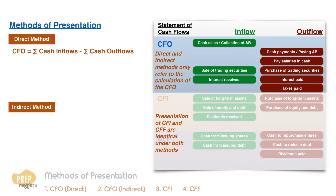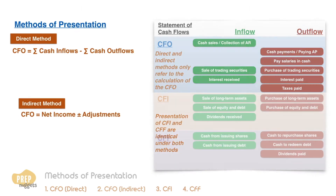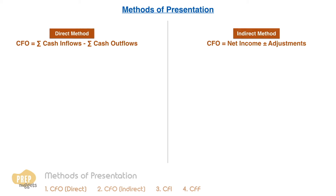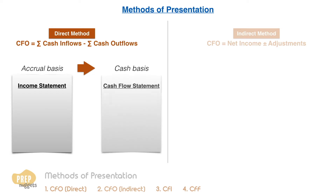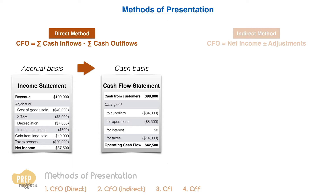The direct method is to identify actual cash inflows and outflows, while the indirect method is to begin with net income and make necessary adjustments to get the CFO. Under the direct method, an accrual basis income statement is converted into a cash basis cash flow statement. Under the accrual method, the timing of revenue and expense recognition may differ from the timing of related cash flows. The direct method begins with cash inflows from customers and then deducts cash outflows for purchases, operating expenses, interest, and taxes.